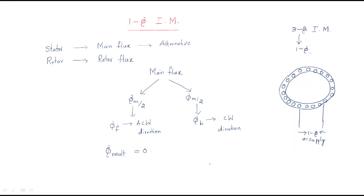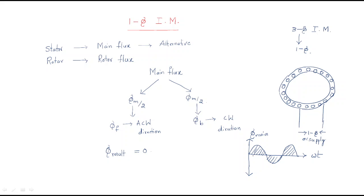When single phase supply is given, the flux generated follows the single phase supply pattern. The flux is alternating in nature — one half cycle is positive and the other half cycle is negative, and this continues. This alternating flux can be divided into two parts.